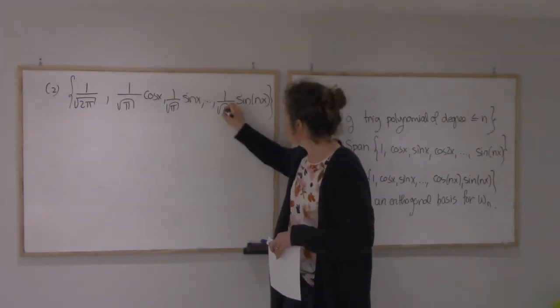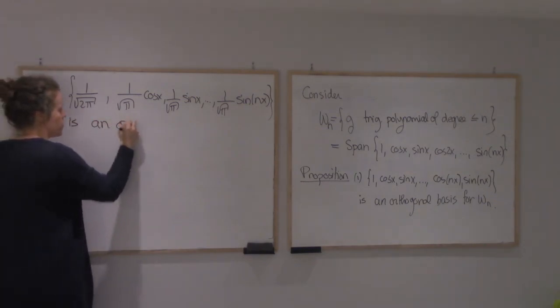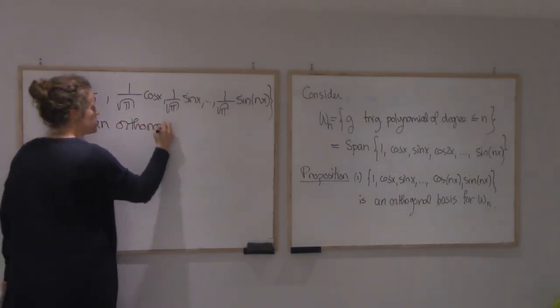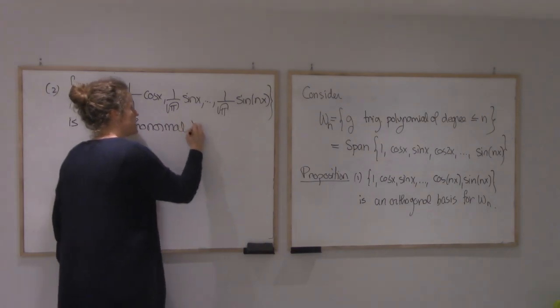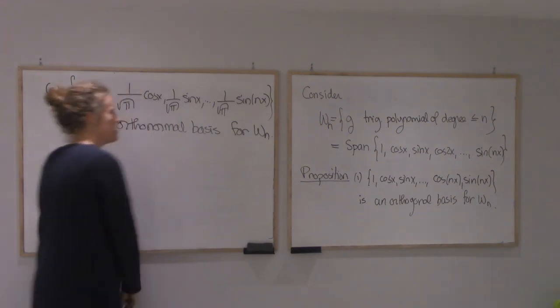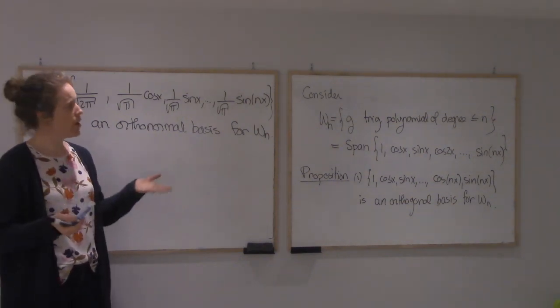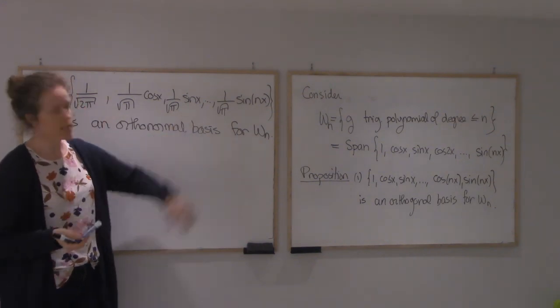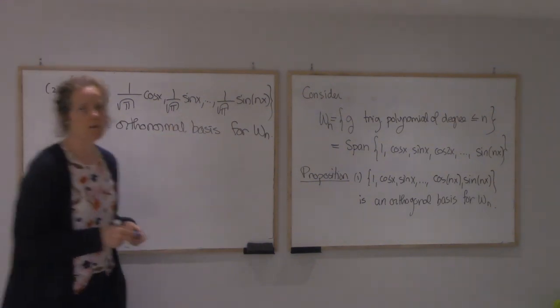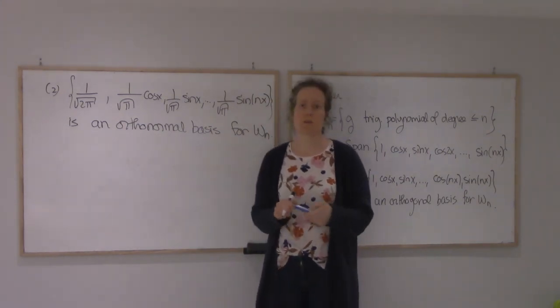All the other ones end up with root of pi. So this one is an orthonormal basis for W. In the next video, I'll use this basis to find the approximation of a function within the space of trigonometric polynomials. Thank you.